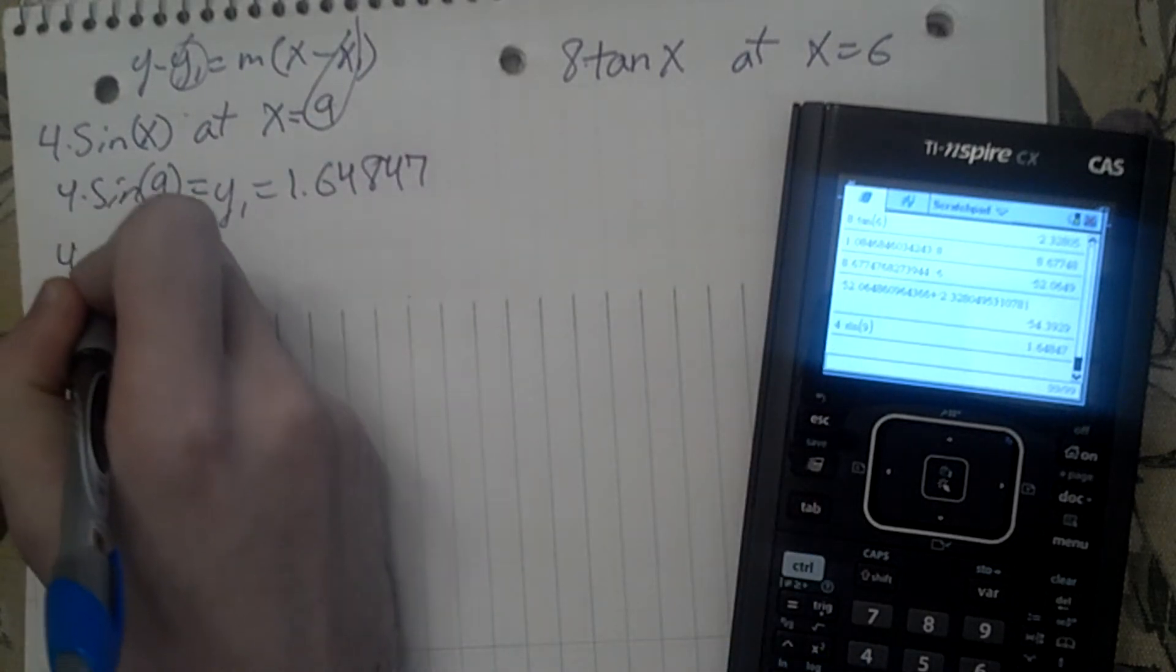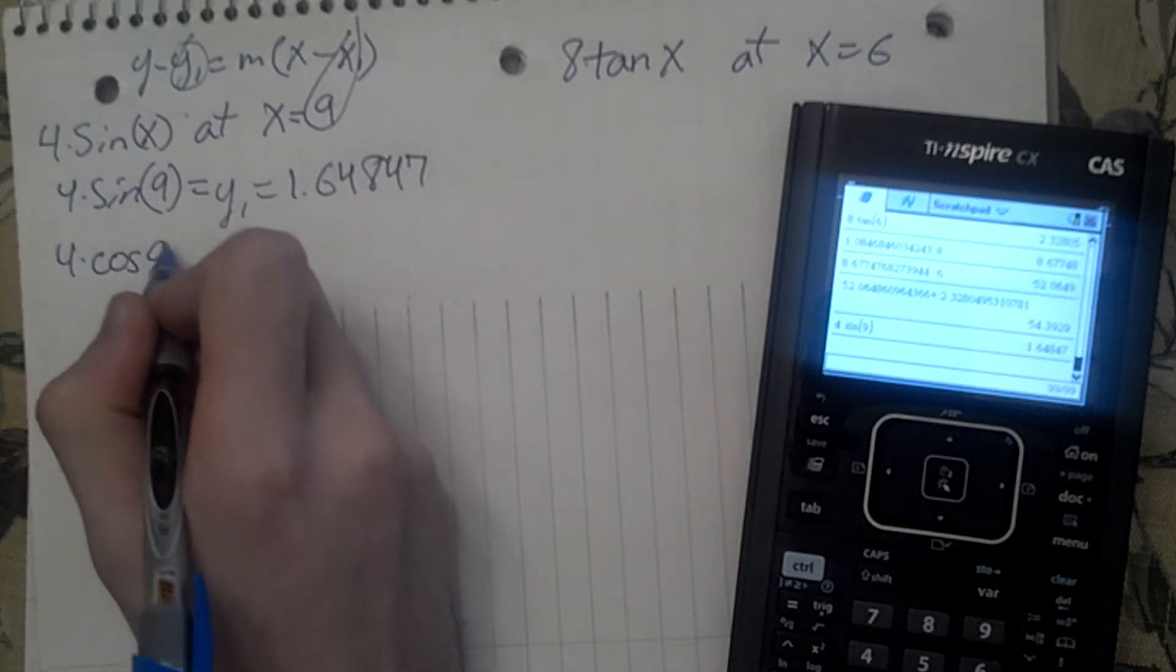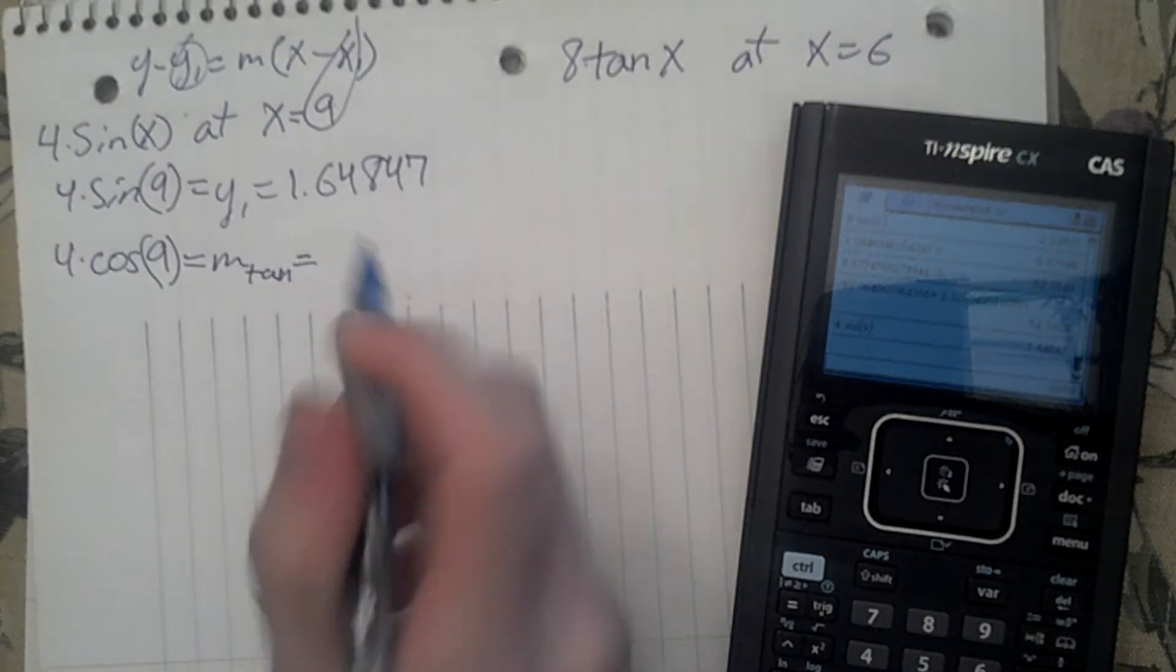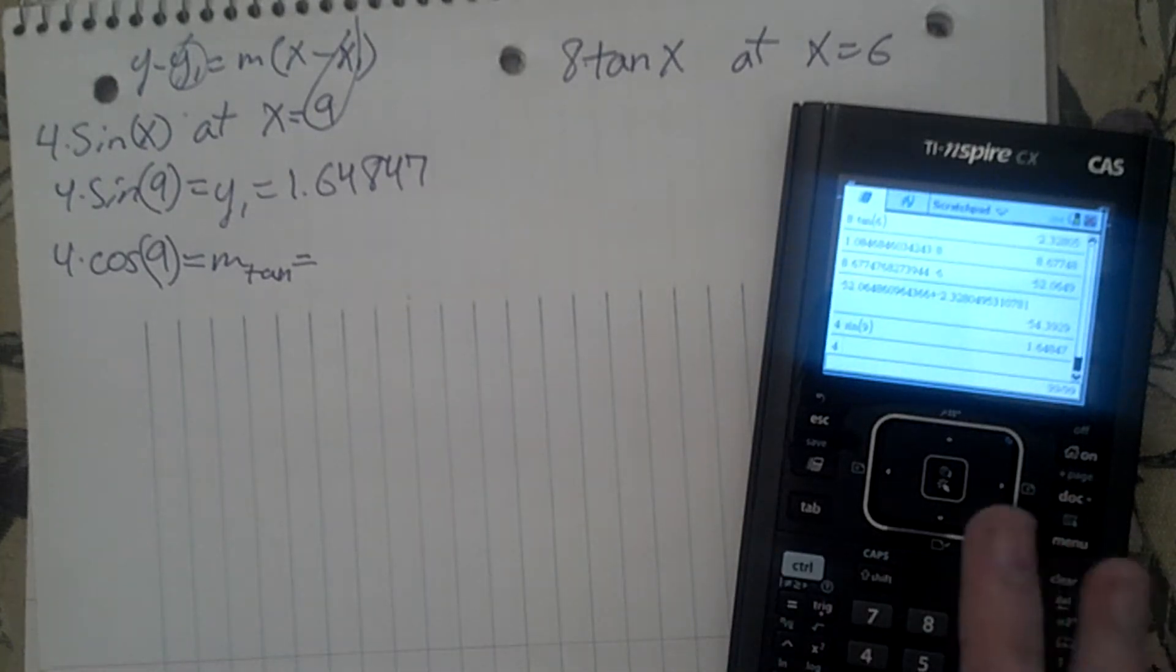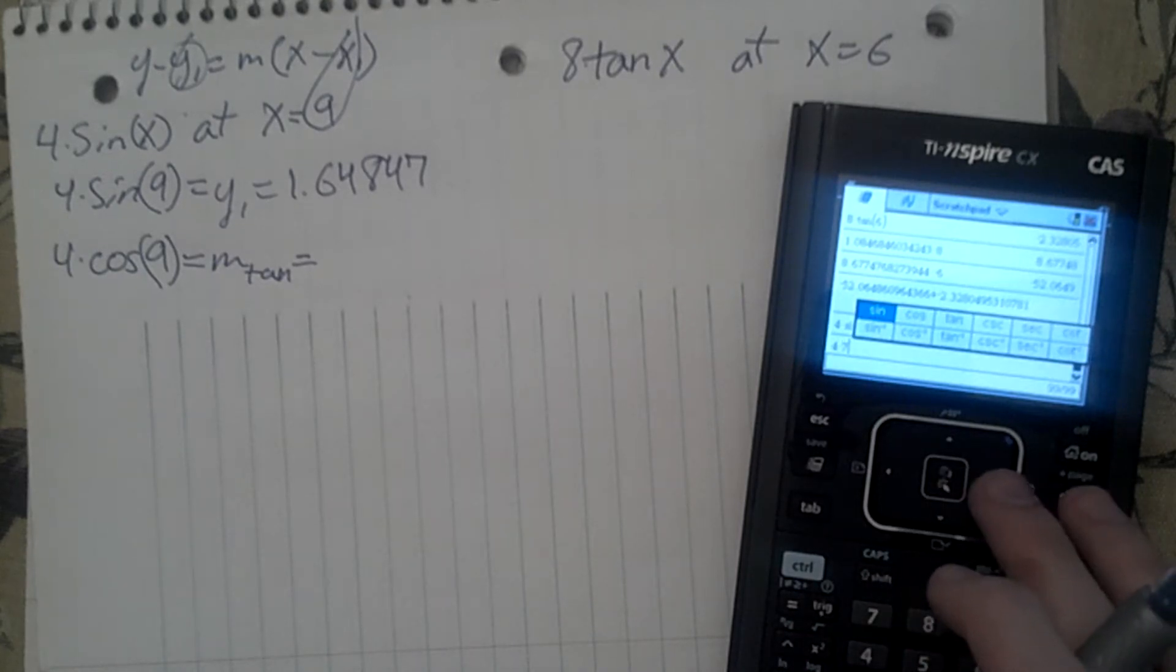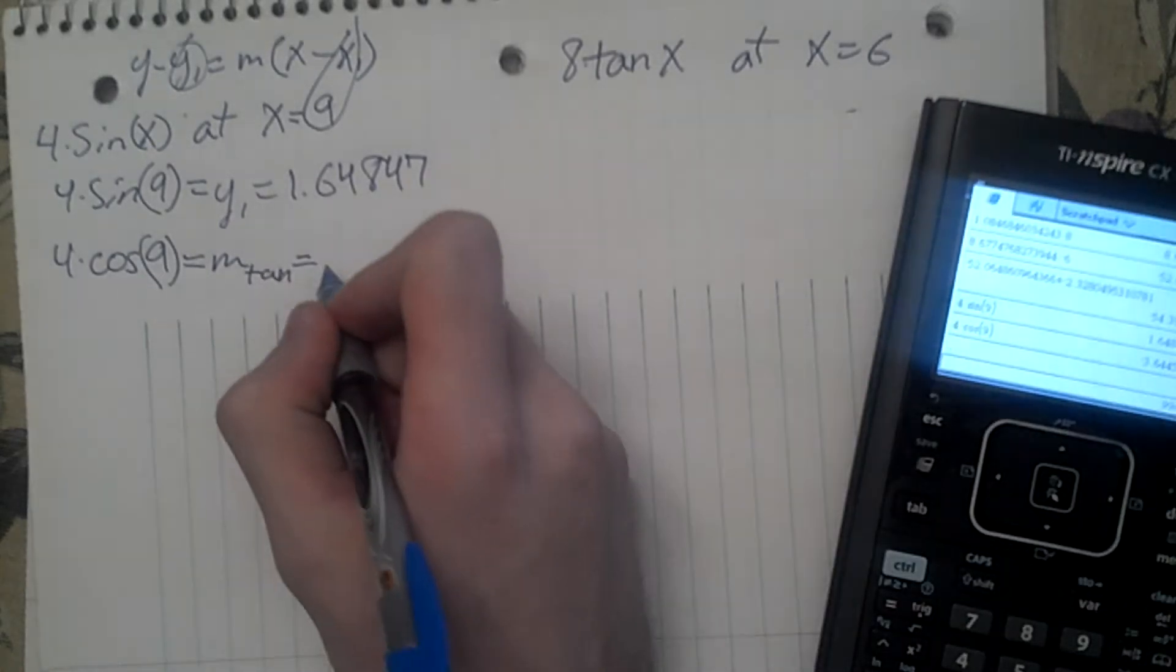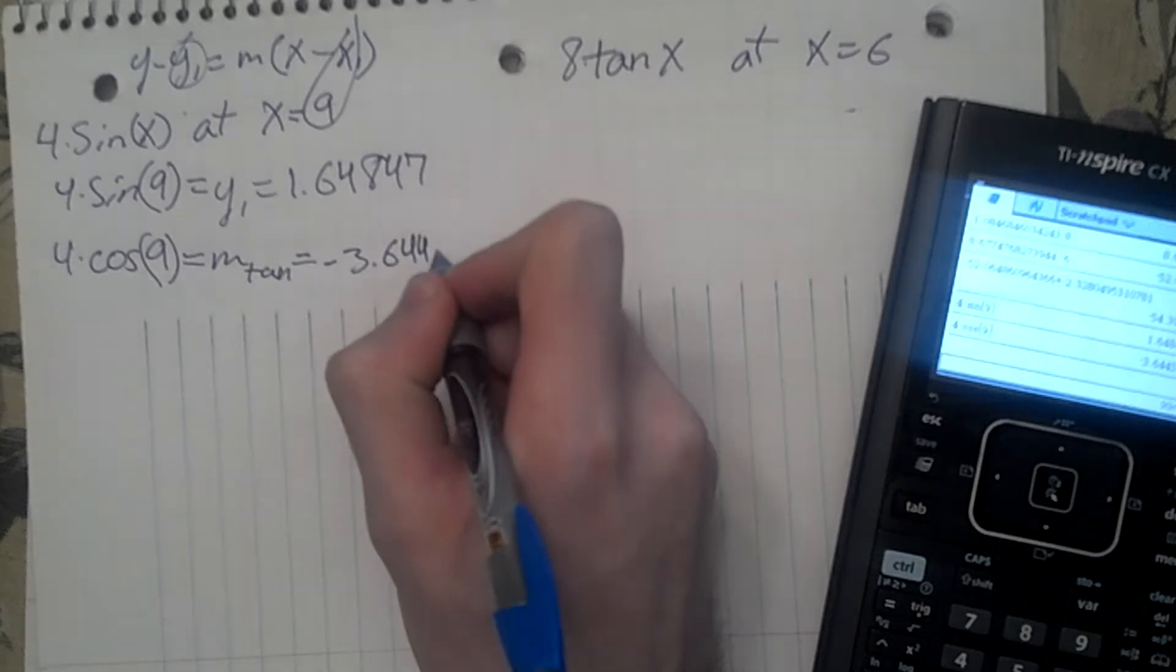It's going to be 4 times cosine would be the derivative. And we plug in 9, and this is going to give us our m, our m tan. So 4 times the cosine of 9 equals negative 3.64450.